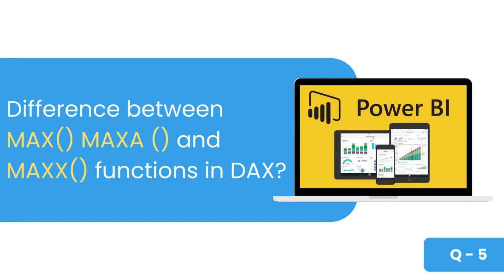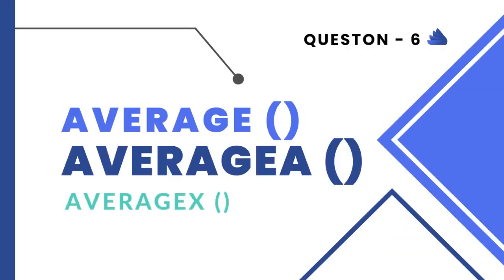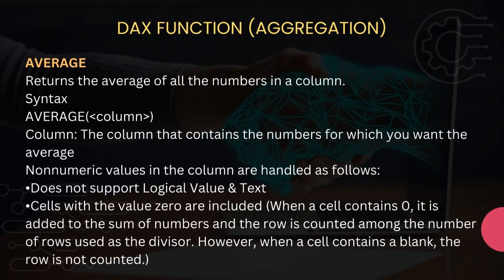The next question is: what is the difference between AVERAGE, AVERAGEA, and AVERAGEX DAX functions in Power BI? AVERAGE returns the average of all numbers in a particular column. The syntax is AVERAGE(column name), and the column must contain numeric data. AVERAGE does not support logical and text type data.